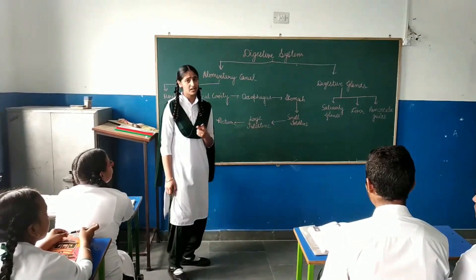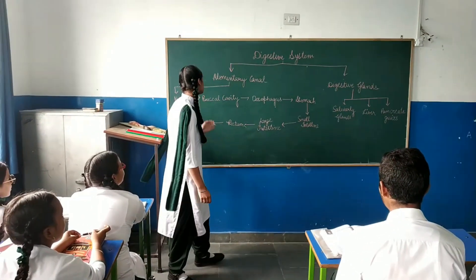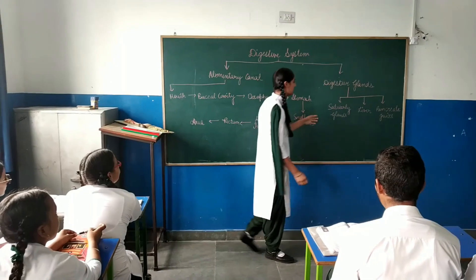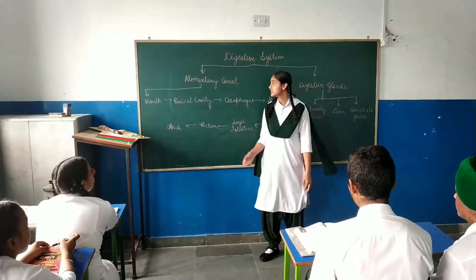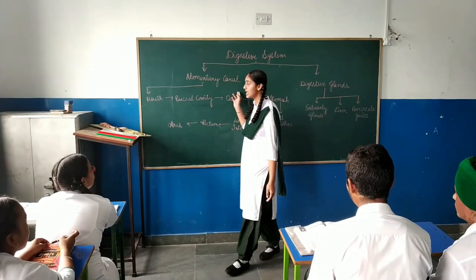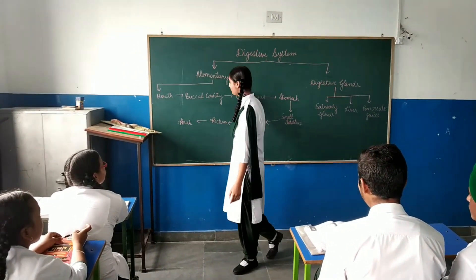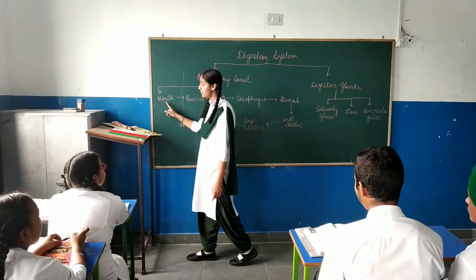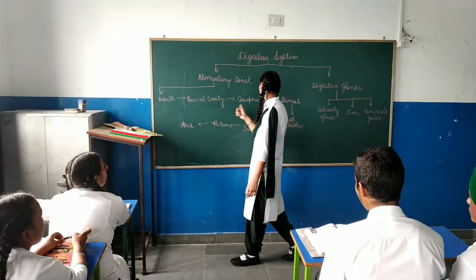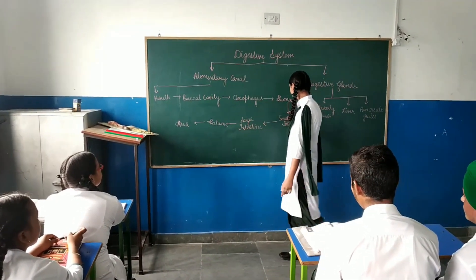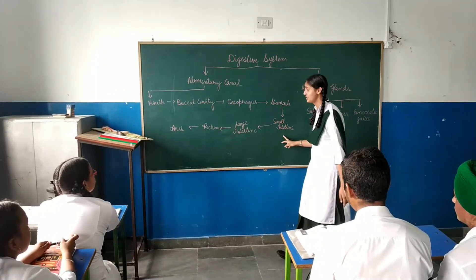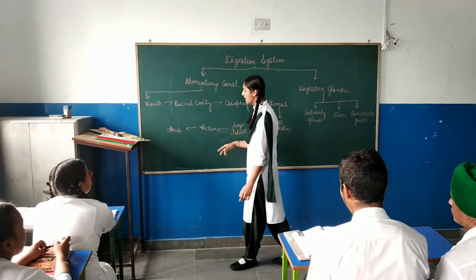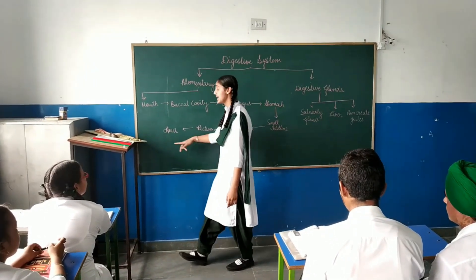The digestive system is divided into two parts: the alimentary canal and digestive glands. Firstly, we will discuss about the alimentary canal. We ingest food from our mouth, then it goes to the buccal cavity, then to the esophagus, there is the stomach, small intestine, large intestine, rectum, and lastly the anus.